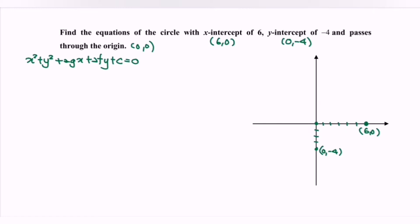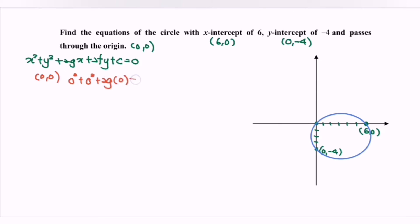Kindly illustrate the situation in the diagram. Here we have the situation in the diagram on the right-hand side. To solve this, first substitute the point (0, 0) into the general form. We will have 0 squared plus 0 squared plus 2g times 0 plus 2f times 0 plus c equals to 0. Simplifying, we get c equals to 0.